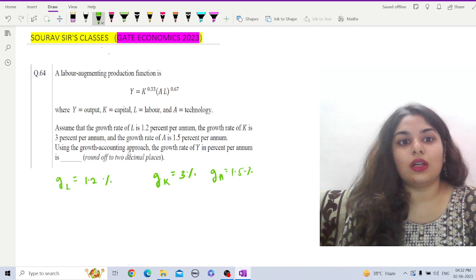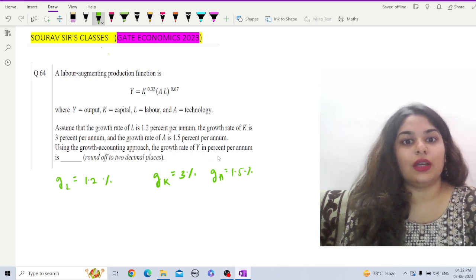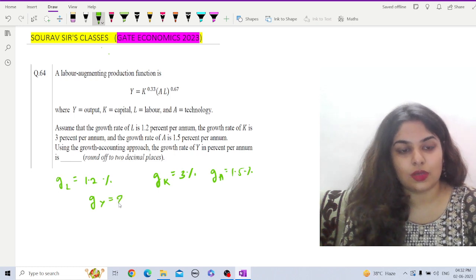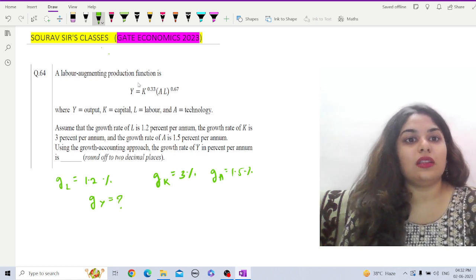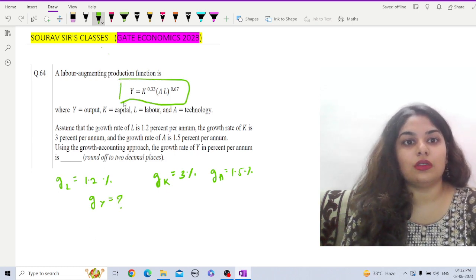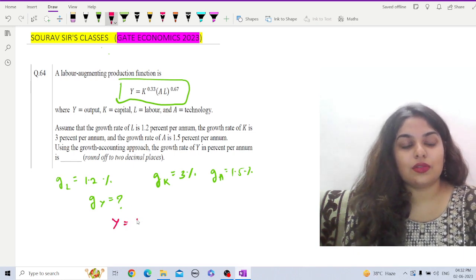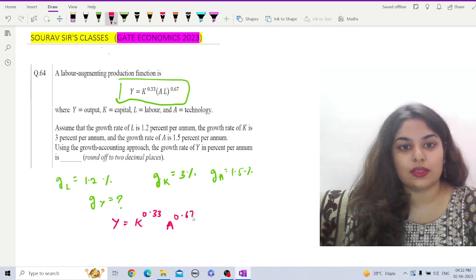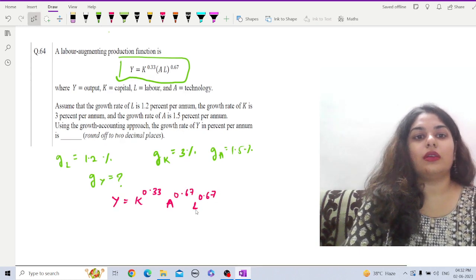Using the growth accounting approach, the growth rate of Y in percent per annum - that means we have to find out gY equals how much. Now in order to find this, the production function that we are given is Y = K^0.33 * A^0.67 * L^0.67. In order to calculate this, let us first take log on both sides.